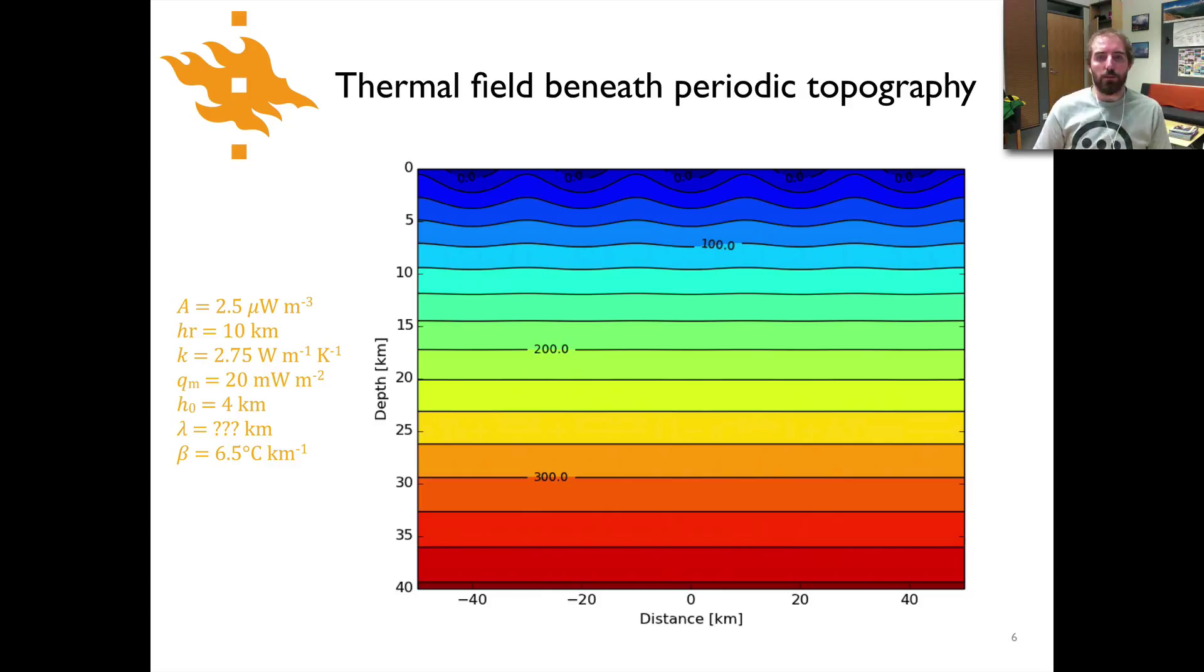Here you can see it clearly illustrates the half of the relief or the amplitude of that sine wave. So there's everything kind of spelled out mathematically. Here is what the temperatures would look like if we did a calculation like this in two dimensions. So here I've assumed a heat production of 2.5 micro watts per cubic meter, e folding depth of 10 kilometers, thermal conductivity of 2.75 watts per meter per kelvin, 20 milliwatt per square meter heat flux at the base of the crust, 4 kilometer amplitude for the waves, and 6.5 degrees per kilometer for the lapse rate. The question for you is what is the wavelength that I've used here? Lambda is question marks here, so what is the wavelength? So go ahead and pause the video and think about that for a second and come back when you've got an idea about the wavelength.